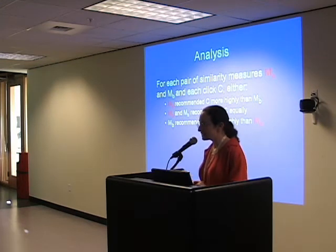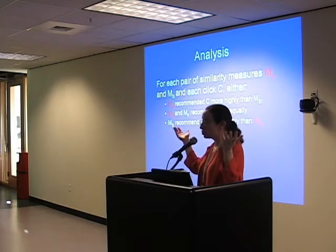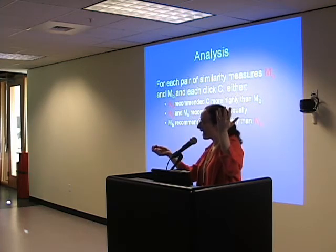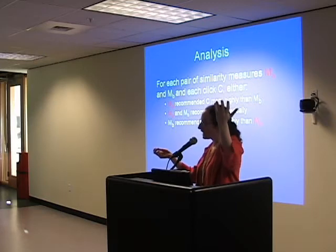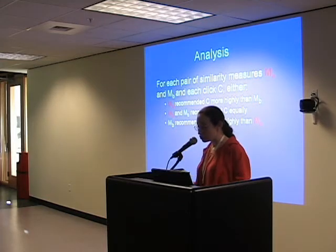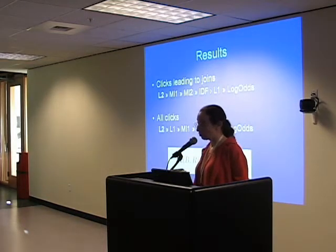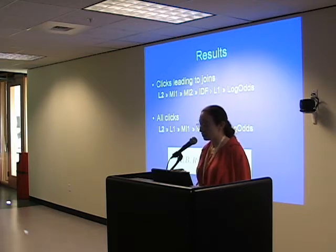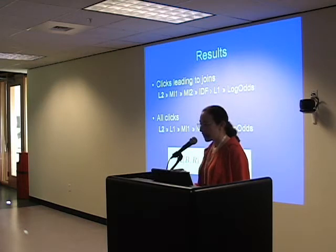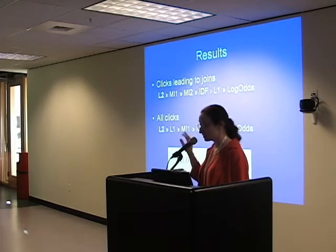For the analysis, each click was choosing among two different algorithms. If L1 rated that item more highly, we give a point to L1; if Log Odds rated it more highly, we give the point to Log Odds. Doing that, we actually got a total order on our results. For clicks leading to joins, L2 gave the best results and L1 was next to worst. All of these were statistically significant except for the single arrows.